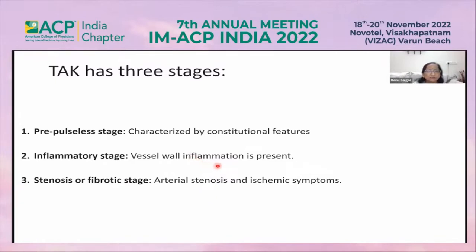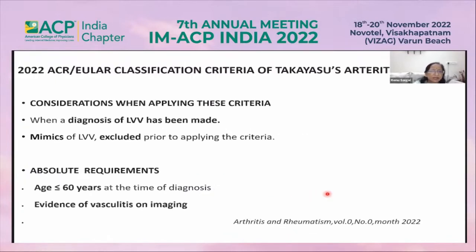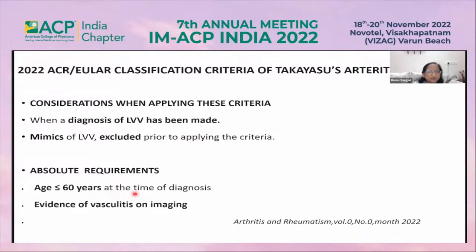Then the inflammatory phase with vessel wall inflammation, followed by the stenotic or fibrotic phase where arterial stenosis and ischemic symptoms occur. When applying the classification criteria — again, published just 10 days ago — we must have made a diagnosis of large vessel vasculitis, excluded mimics, and the absolute requirement is age 60 years or less at diagnosis.